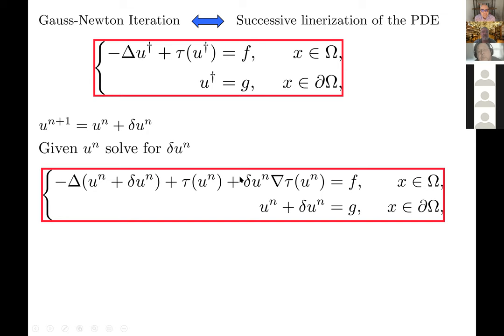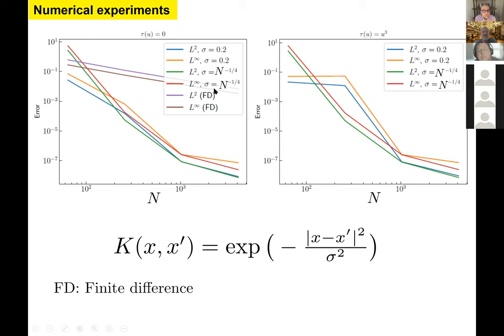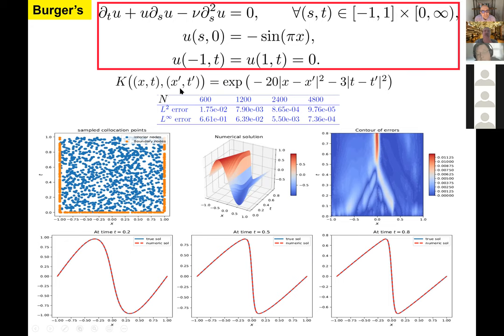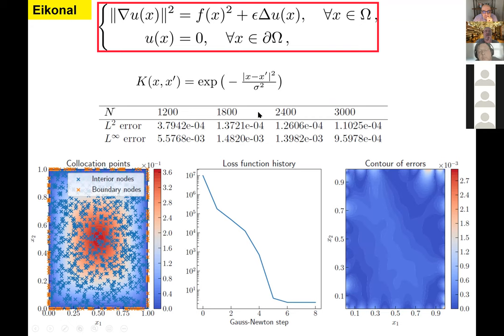Numerical experiments compare the convergence of the finite difference method with the proposed method using a Gaussian kernel — we get convergence to machine precision, which is something you typically do not see with neural network-based methods. This method and its convergence have been generalized to arbitrary nonlinear PDEs. For Burgers' equation we use an anisotropic kernel where the length scale in space is smaller than in time to capture shock development. For the eikonal equation with a Gaussian kernel, the Gauss-Newton algorithm converges in six steps.